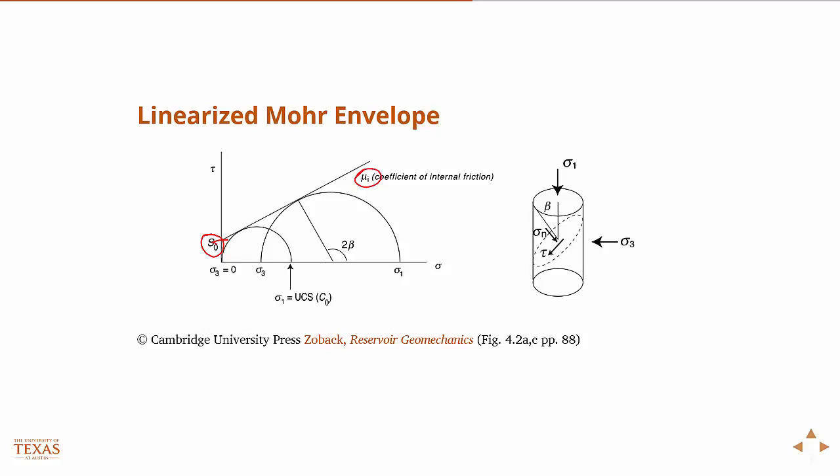And so we have a line now, and we can write a very simple model from that line. The model is just the equation of the line. So it's tau is the y-intercept plus the slope times the normal stress.